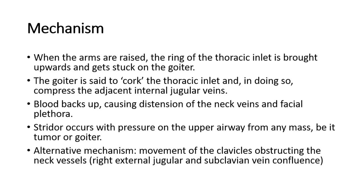The goiter is said to cork the thoracic inlet, and in doing so, compress the adjacent internal jugular veins. Blood backs up, causing distension of the neck veins and facial plethora, causing a positive Pemberton's sign.